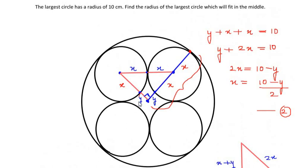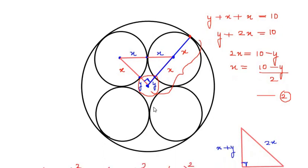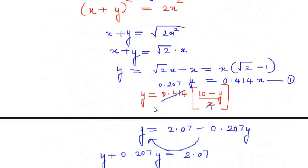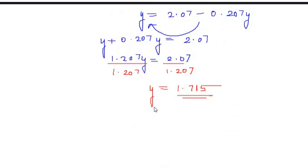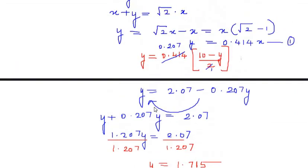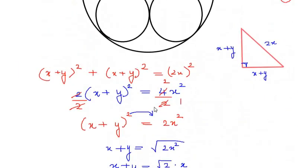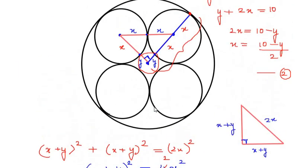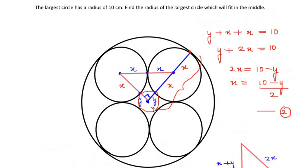So the radius of the small circle that fits at the center of the large circle is approximately 1.715 centimeters. I hope you have understood all the steps and liked the video. If you are liking my videos, please like, share, and subscribe to my channel. Thank you for watching.